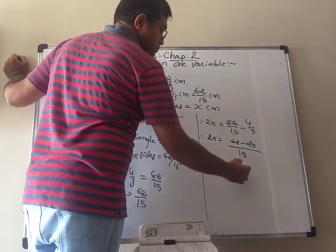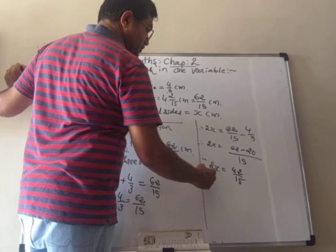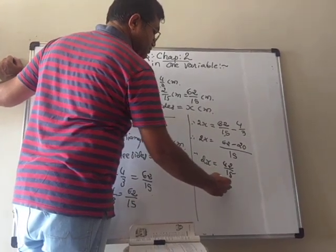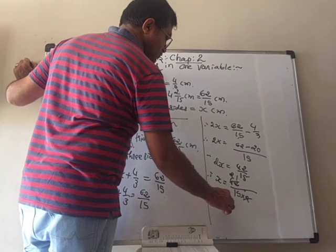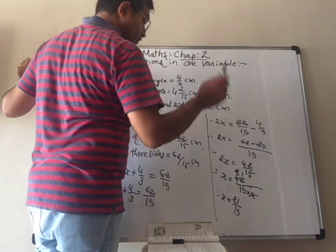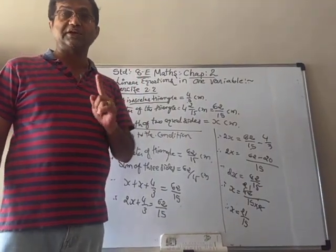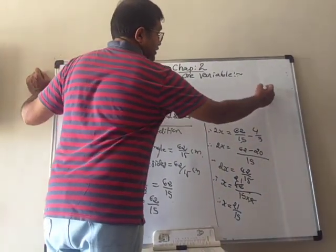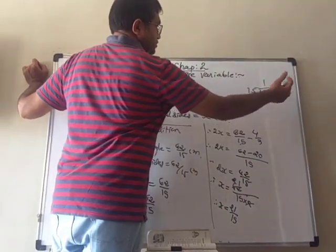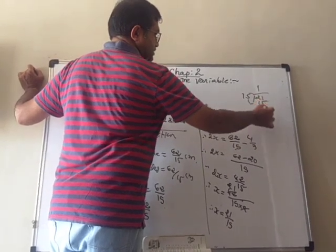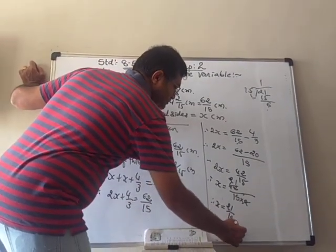62 minus 20 is 42, so 2x equals 42/15. Taking 2 to the other side as denominator, x equals 42/15 divided by 2, which is 42/30. Two 21s are 42, so x equals 21/15. Converting to mixed fraction: 21 divided by 15 gives 1 remainder 6, so x equals 1 and 6/15 cm.